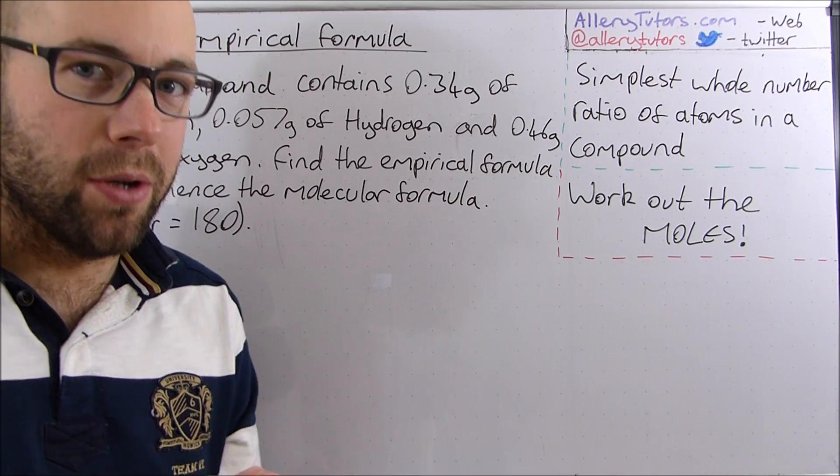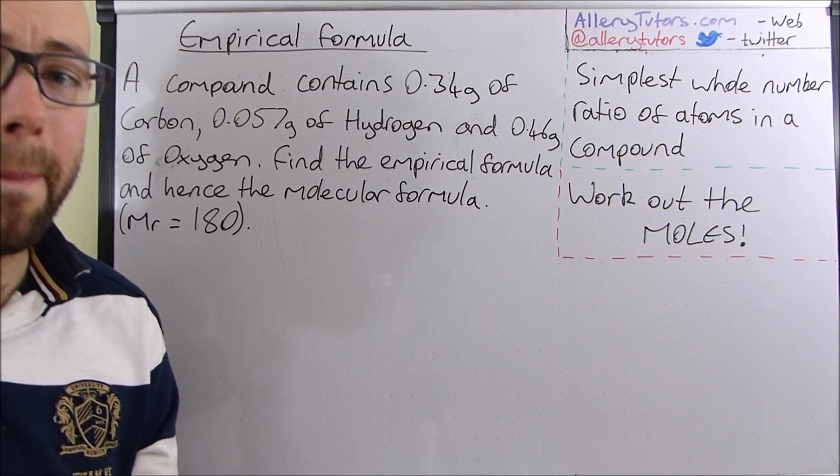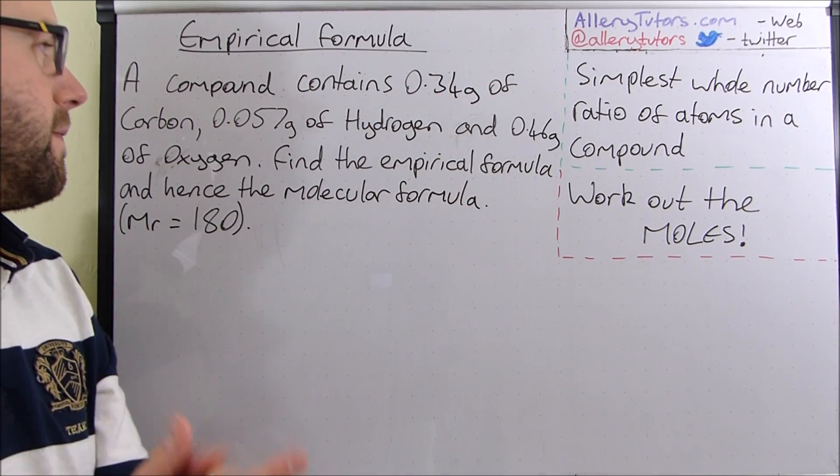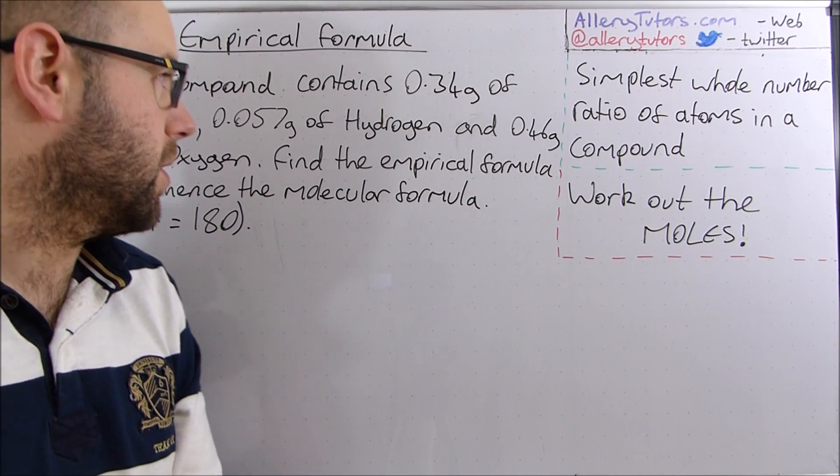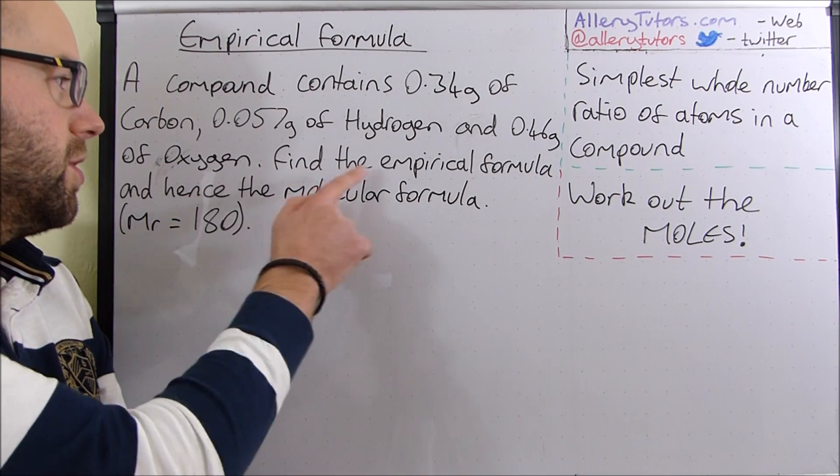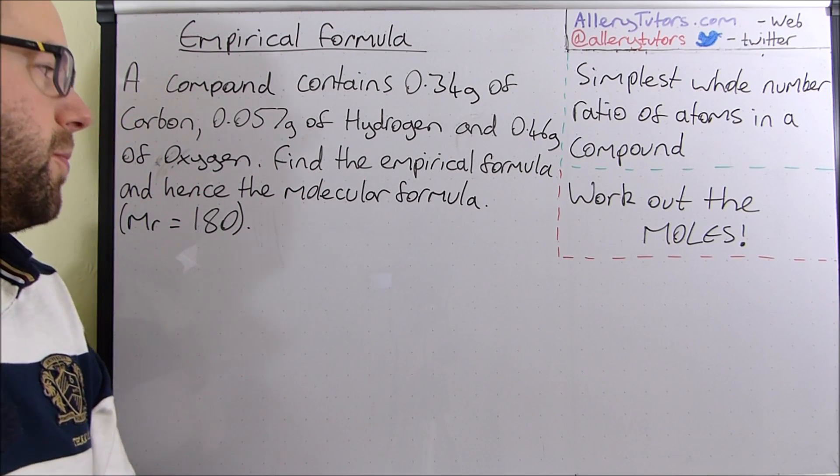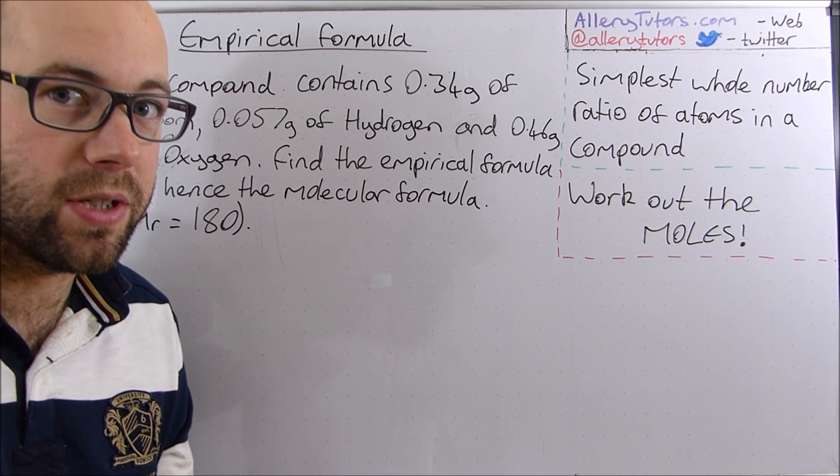But the key thing with this is you need to work out moles so you need to know how to calculate moles for these things. We've got a compound and it contains 0.34 grams of carbon, 0.057 grams of hydrogen and 0.46 grams of oxygen and what we need to do is find the empirical formula and the molecular formula as well so we're going that one step further.